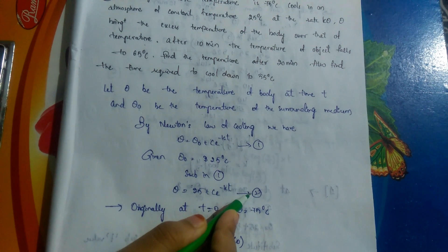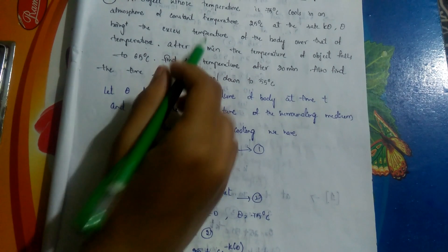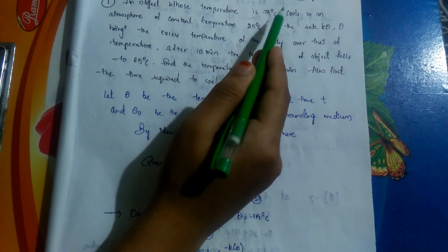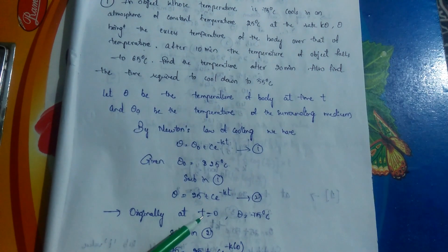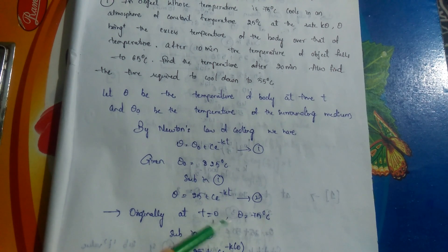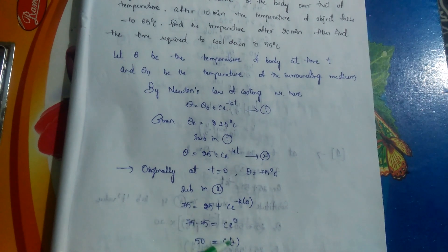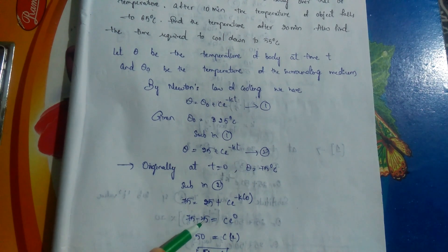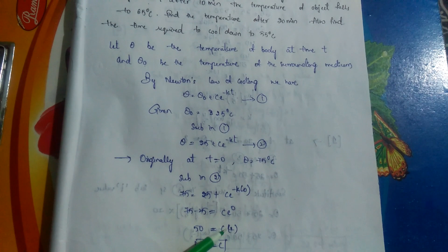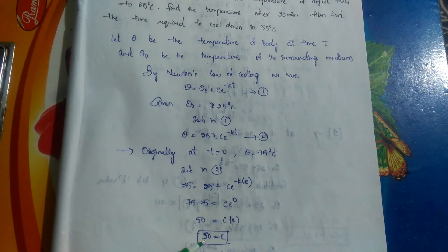Originally at T = 0, θ = 75°C, since the object's initial temperature was 75°C. Substituting into equation 2: 75 = 25 + C·e^(−k·0). Sending 25 to the left side: 75 − 25 = C·e^0 = C·1, so C = 50. Now we need to find the value of k.